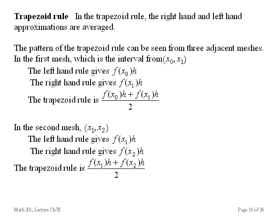Right here, we have the area determined by the left-hand rule. Here's the value of the function at the left-hand side of mesh number one, at x-naught, times the width. So height times the width gives me the area. Here's the right-hand rule. For the trapezoid rule, I add them together and divide by 2.